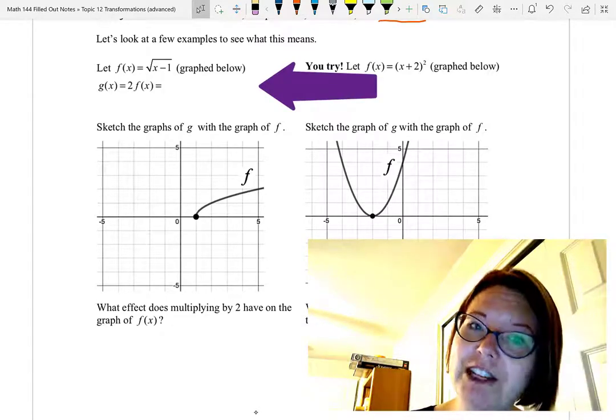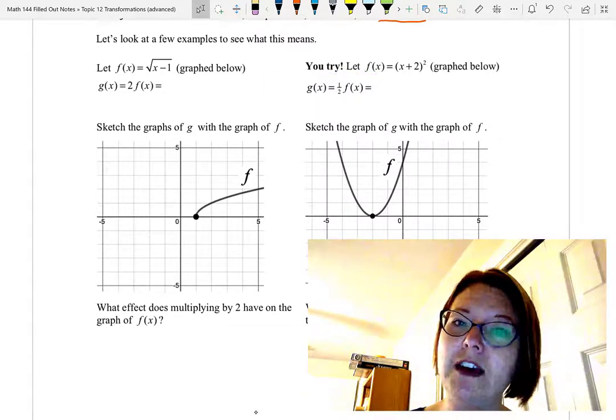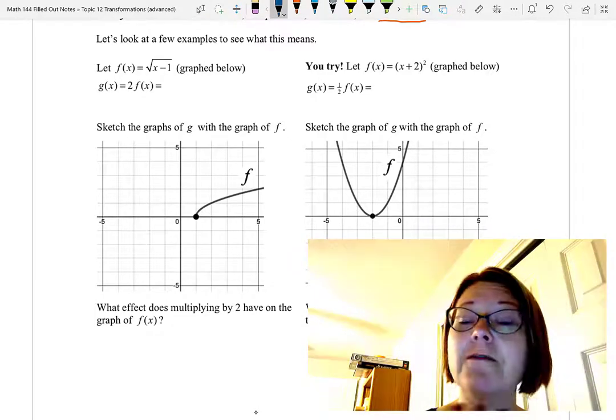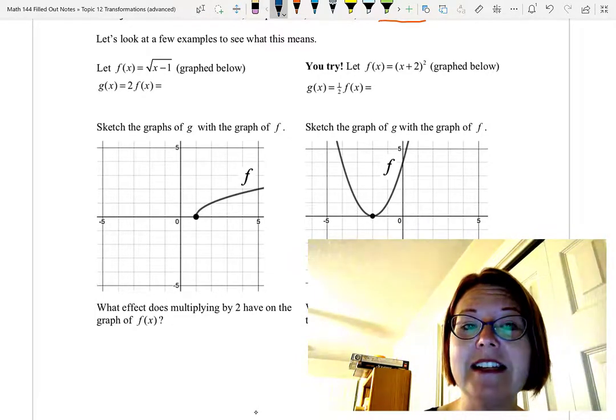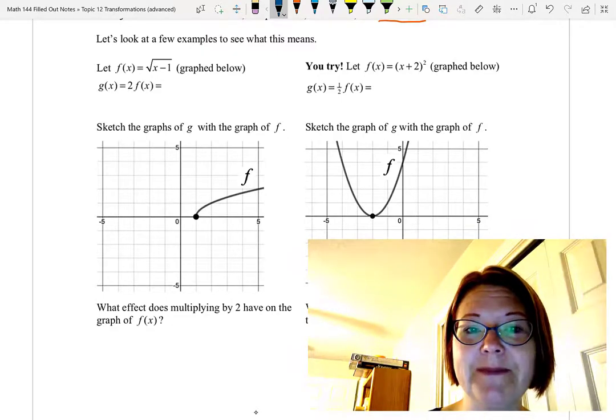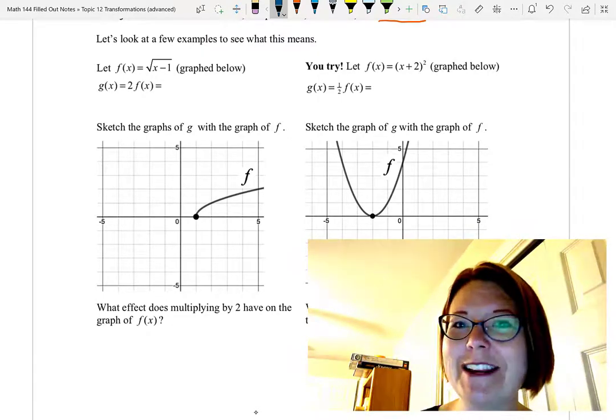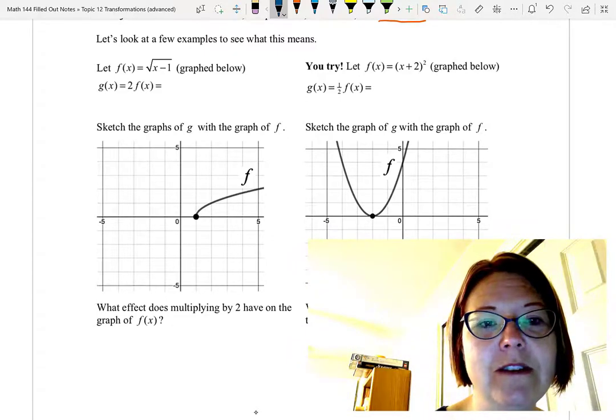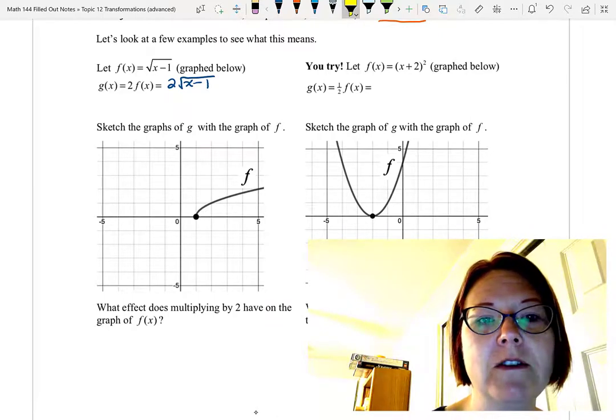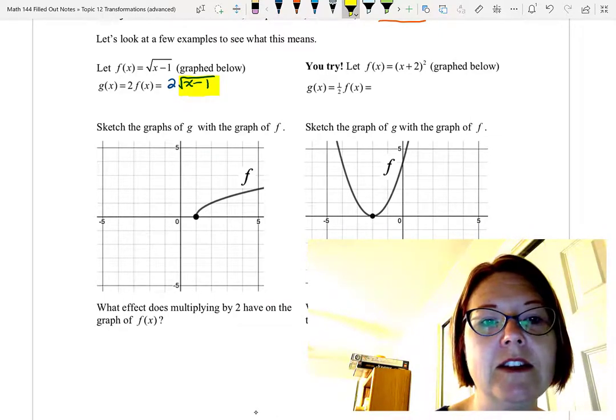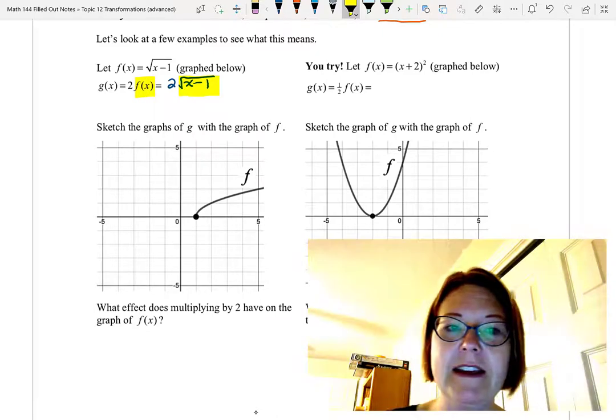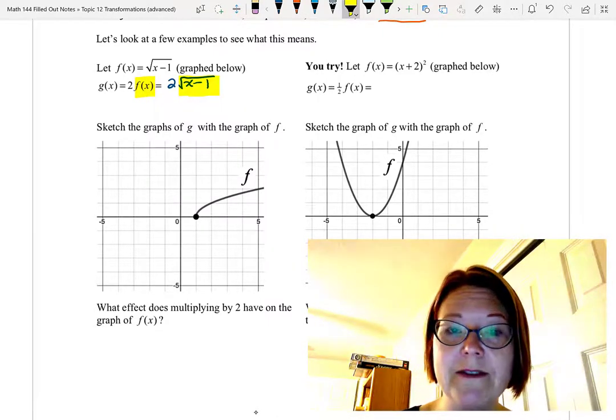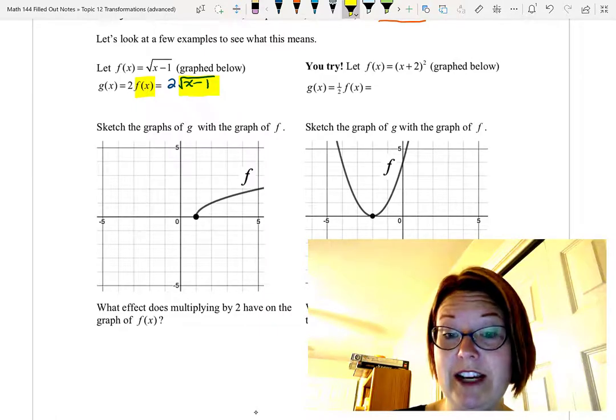We want to graph g(x) equals 2 times f(x). Now the first thing we're going to do is actually find 2 times f(x). So we need to do 2 times the square root of x minus 1. Remember that the square root of x minus 1 is just that f(x) that we're plugging in. And we want to see what that does to the graph. So let's move over to Desmos and check it out.